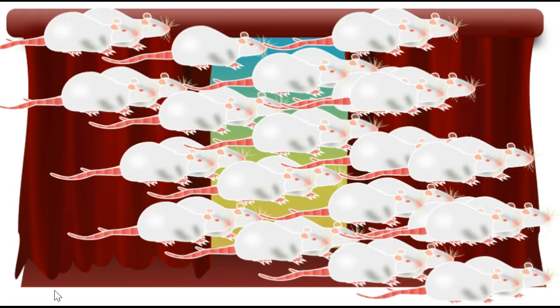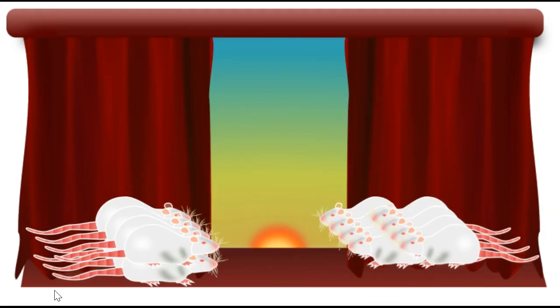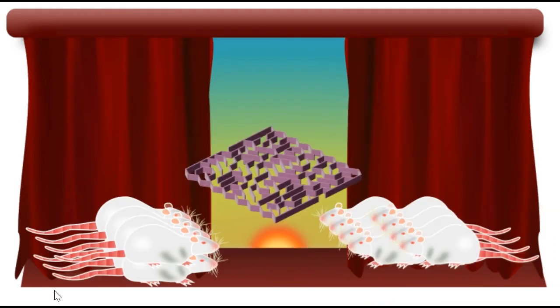There were some rats, lots of rats, maybe not that many rats. There were two groups of rats, for sure, and a maze. What Dr. Rosenthal did is he labeled each group. He labeled one maze dull, and he labeled the other maze bright.